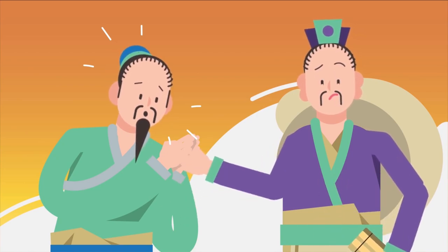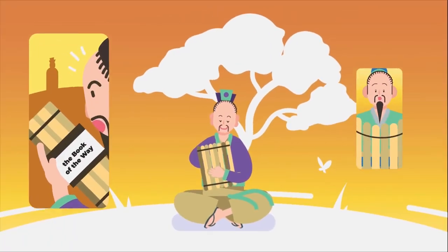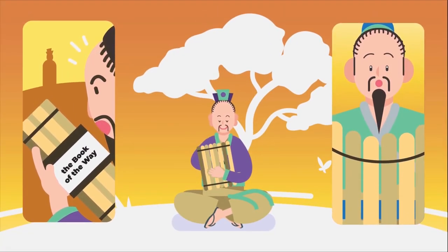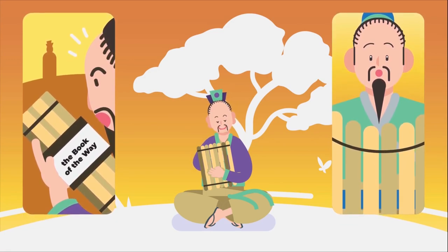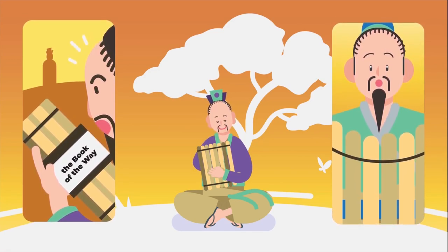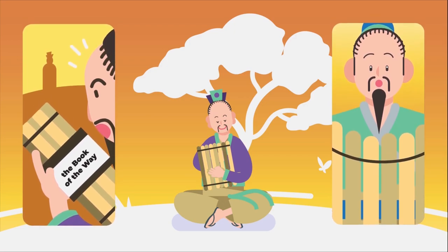Lao Tzu sat and wrote the book which is now regarded as the Tao Te Ching, the Book of the Way. When he was done, he gave the book to Yinxi and disappeared into the mist, never seeing what his philosophy would go on to achieve.